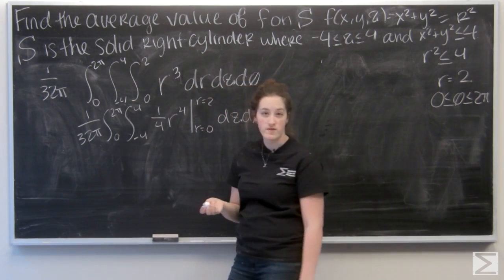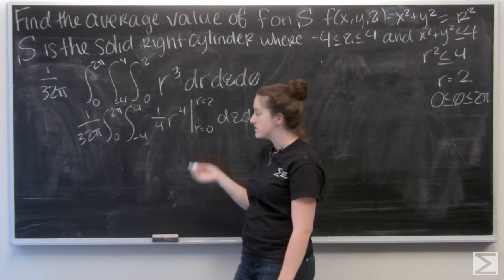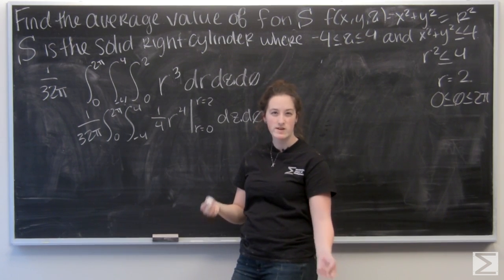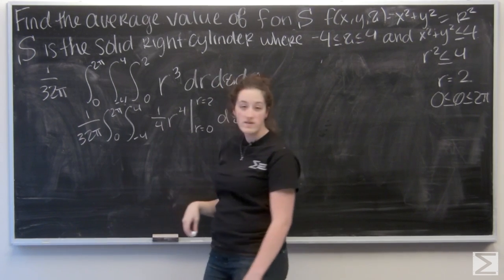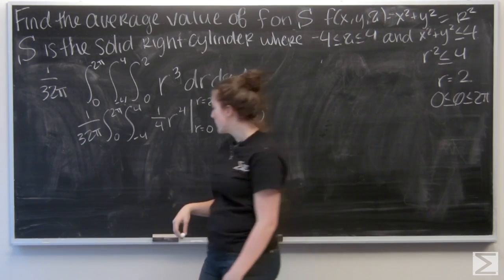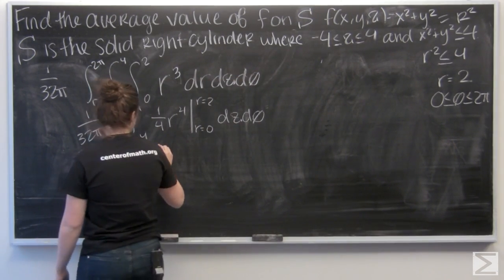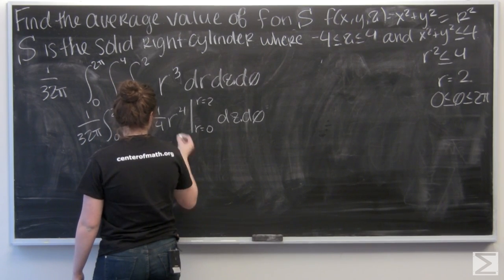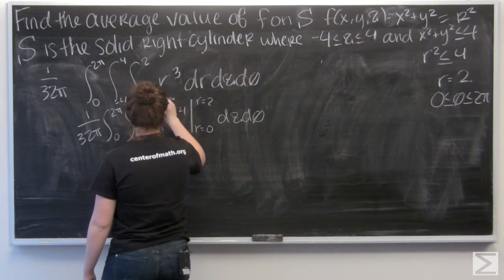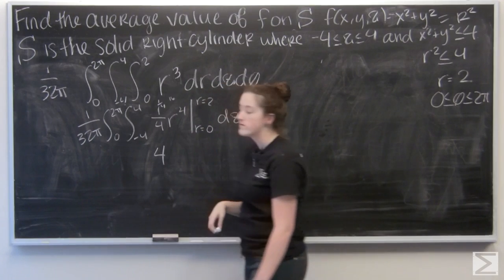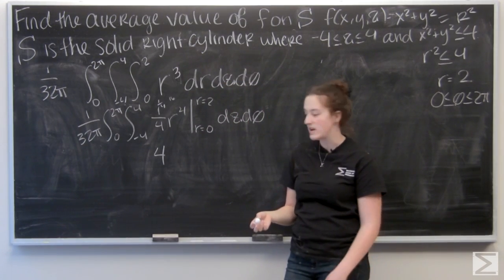And I want to evaluate that from r equals 0 to r equals 2. So let's plug in 2 first. 2 to the fourth is going to be 16. 2 squared is 4 times 4 is 16. But when I divide by 4, I'm going to be left with 4. 16 times 1 over 4. And then for r equals 0, I'm just going to have 0.